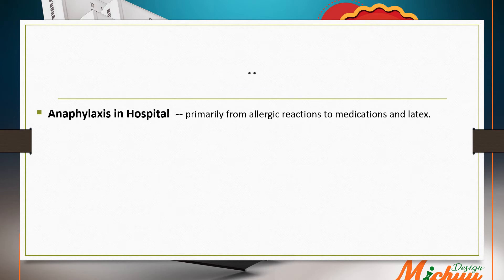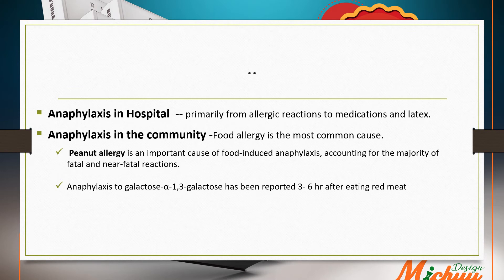Anaphylaxis in the hospital is primarily from allergic reactions to medication and latex, whereas anaphylaxis in the community is mainly from food allergy. Peanut allergy is an important cause of food-induced anaphylaxis, accounting for the majority of fatal and near-fatal reactions. In the hospital, latex is a particular problem for children undergoing multiple operations, such as patients with spina bifida and urologic disorders, which has prompted many hospitals to switch to latex-free products.